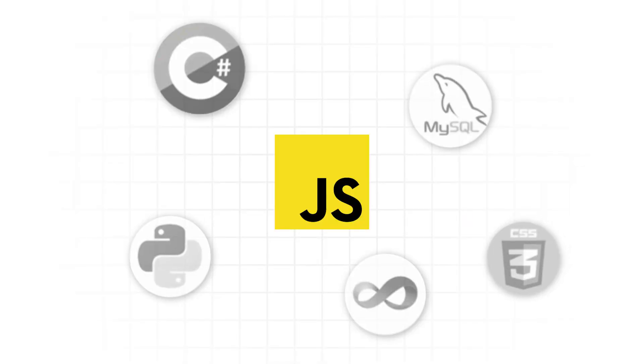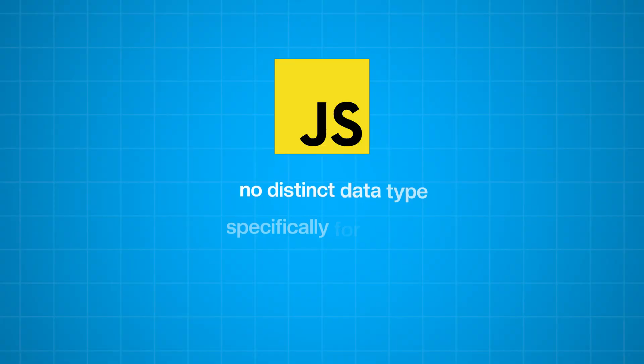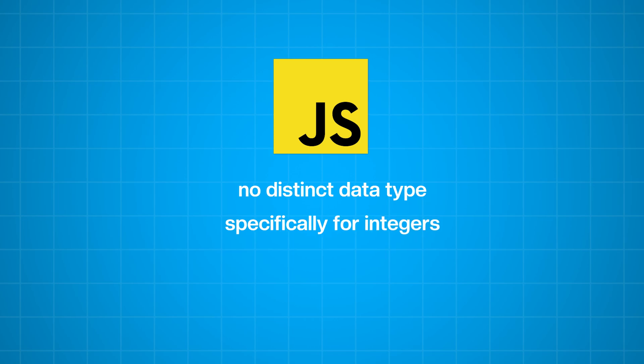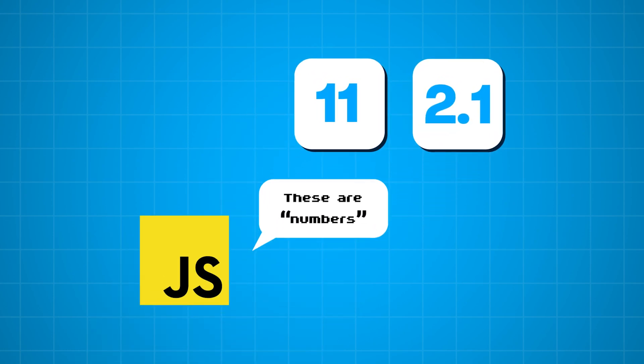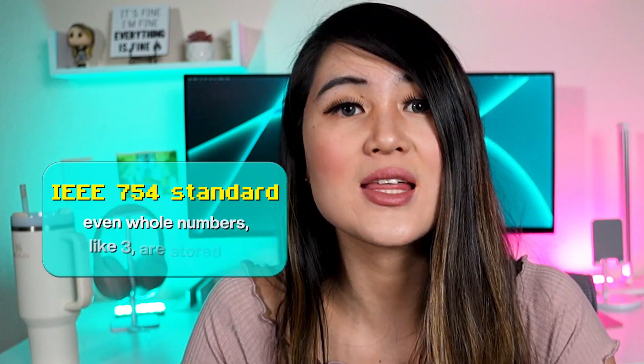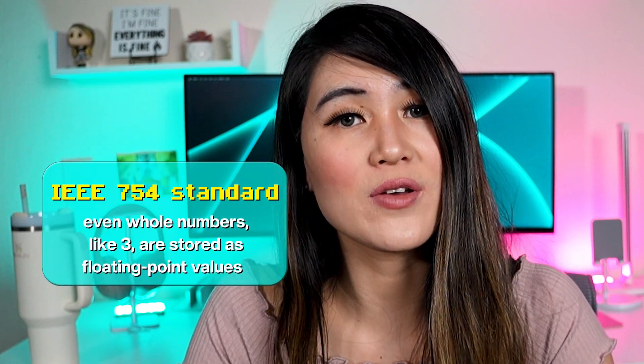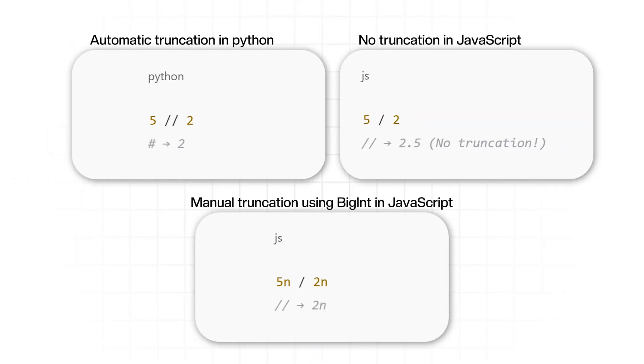For those used to other programming languages, JavaScript is just different in many ways. In JavaScript, there's no distinct data type specifically for integers. Unlike many other languages where integers are treated as a separate type with fixed precision, JavaScript represents all numbers — whether whole numbers or floating-point values — using the same number type. This follows the IEEE 754 standard for floating-point arithmetic, meaning even whole numbers like 3 are stored as floating-point values. This can lead to precision issues with very small or very large numbers, and JavaScript lacks integer-specific operations like automatic truncation, so you have to use BigInt.